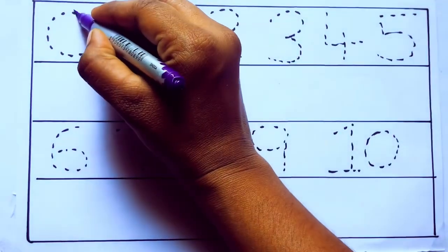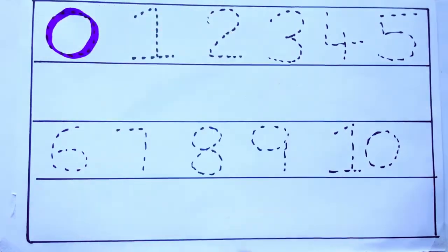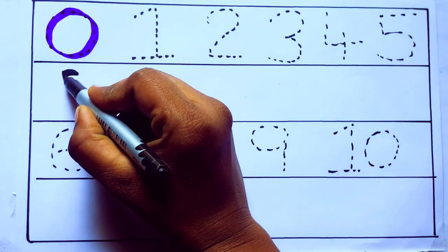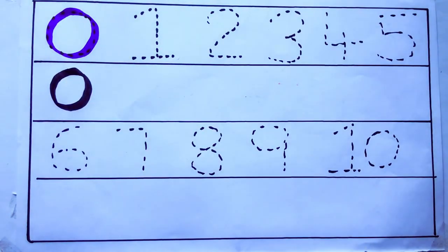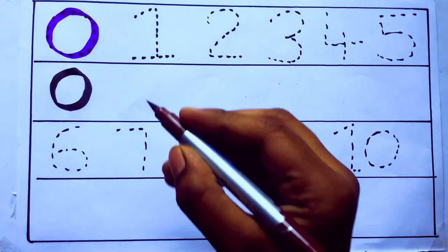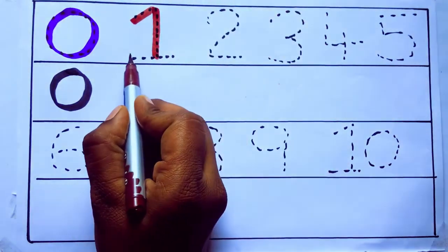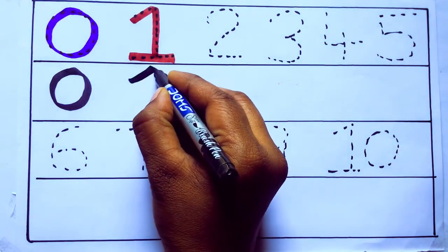Violet color 0, Z-E-R-O. Violet color 0. Brown color 1, O-N-E, number 1.